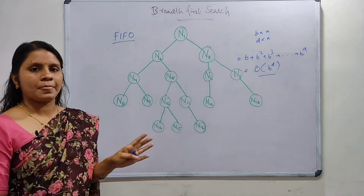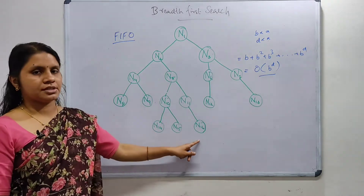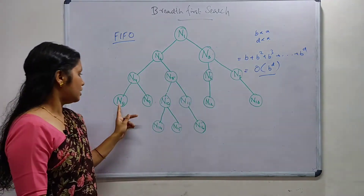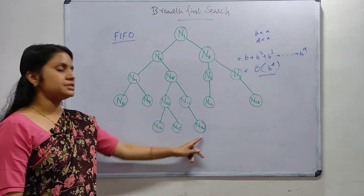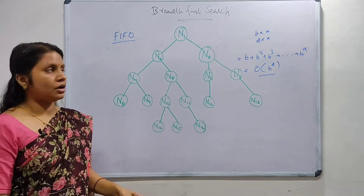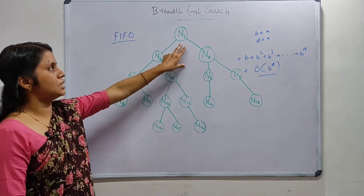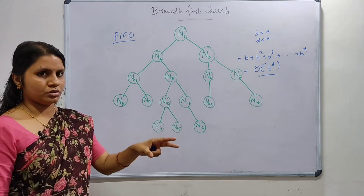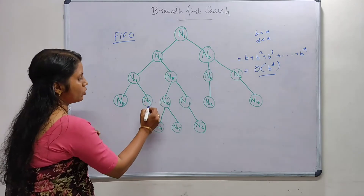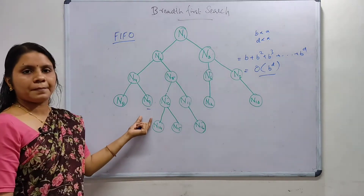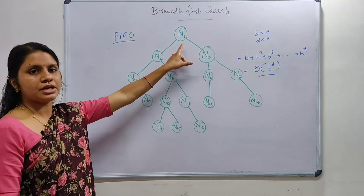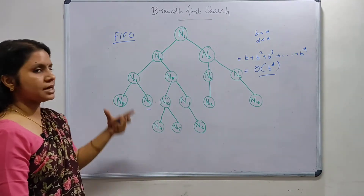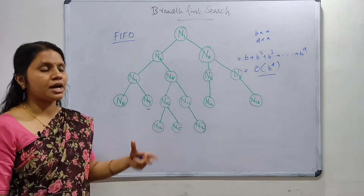Consider this graph with 16 nodes: N1 through N16. We start from the initial node N1, and our goal node is N9. BFS will expand from the root node, then expand its successors, repeating this process until the goal is found.